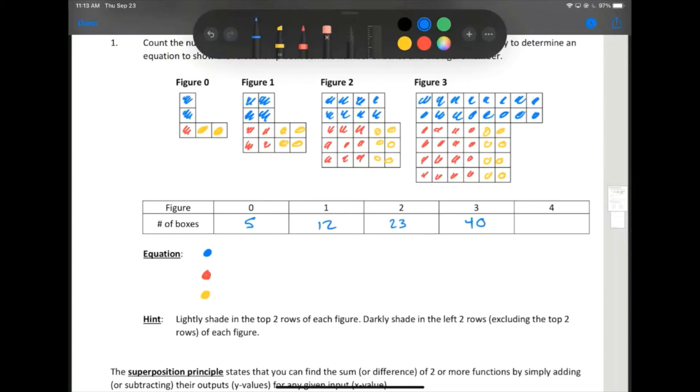Okay, we have the blue, we have the red, and we have the yellow. First of all, what's the pattern in the blue? We go 2, 4, 8, 16. I think that's going to be y equals 2 to the x plus 1, so that when we plug in 0, we get 2 to the 1, which is 2. That's how many blue ones we have in figure 0. When we plug in figure 1, 2 to the 2 is 4. When we plug in figure 2, we get 2 to the 3 is 8, and then 2 to the 4 is 16.